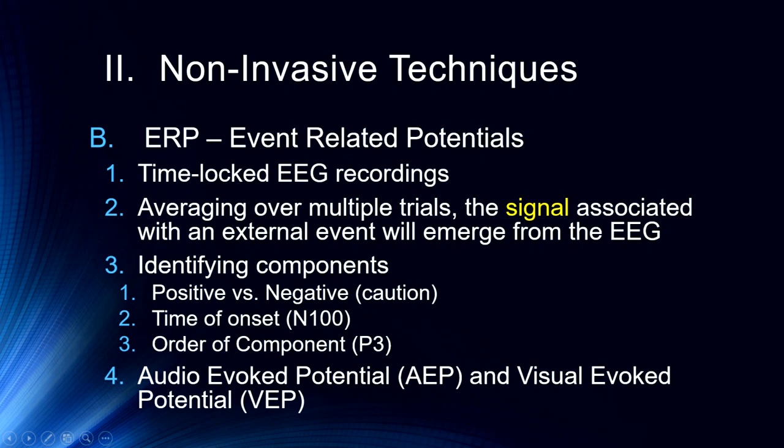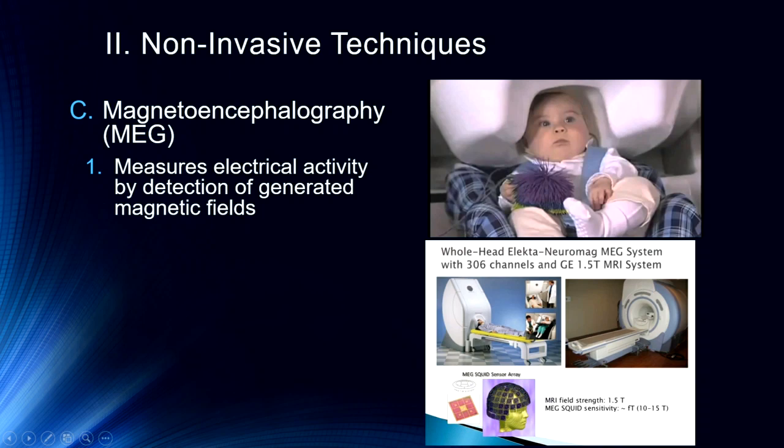Finally, I want to note that there are some specialized ERP signals: auditory evoked potentials and visually evoked potentials. Auditory evoked potentials are those that occur because of a sound; visually evoked potentials are those that occur because of vision. These are diagnostic techniques used to determine, for example, whether an individual has nerve damage affecting hearing, or whether the visual system is working as it's supposed to.